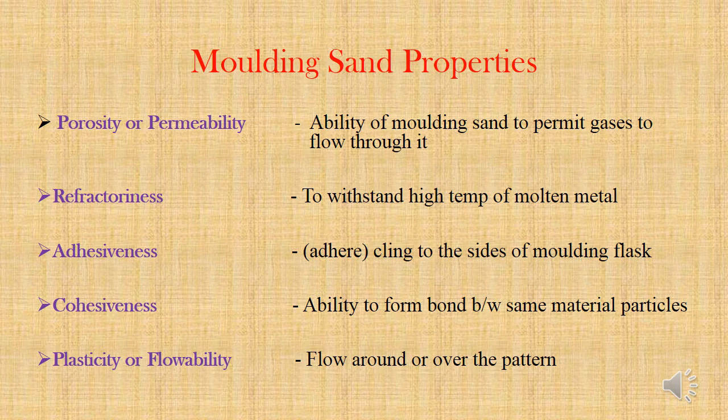Next is adhesiveness — the sand particles must be capable of sticking to other bodies, particularly to the molding flask, that is cope and drag. This property is called adhesiveness. Next is cohesiveness, which is just opposite to adhesiveness. This is the ability of sand particles to stick to each other, and which is also called the strength of the molding sand. And finally, plasticity or flowability — the ability of molding sand to flow around the pattern and take the desired shape.